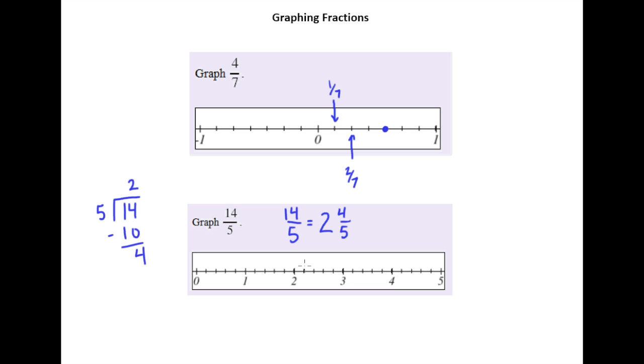So two and four fifths would be two and one fifth, two fifths, three fifths, four fifths. So two and four fifths falls right there.